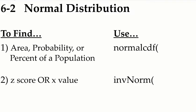In section 6-2, there are only two types of problems you're going to be dealing with. The first is you're going to be asked to find area, probability, or percent of a population — those three things are synonymous. Anytime you are asked to find an area, a probability, or percent of a population, the function you're going to use in the calculator is the normal CDF function.